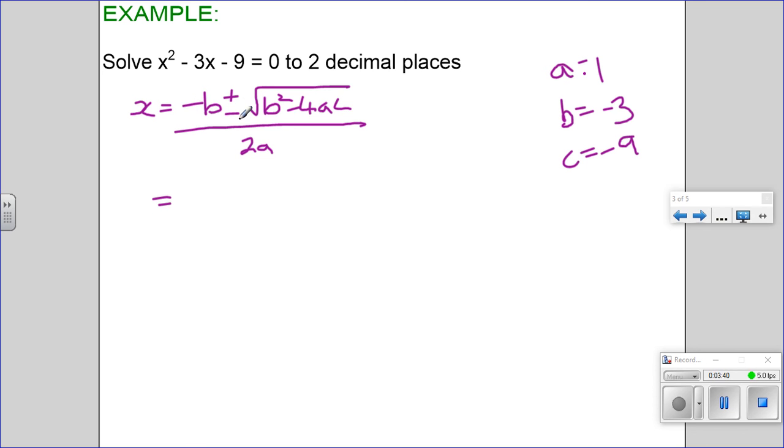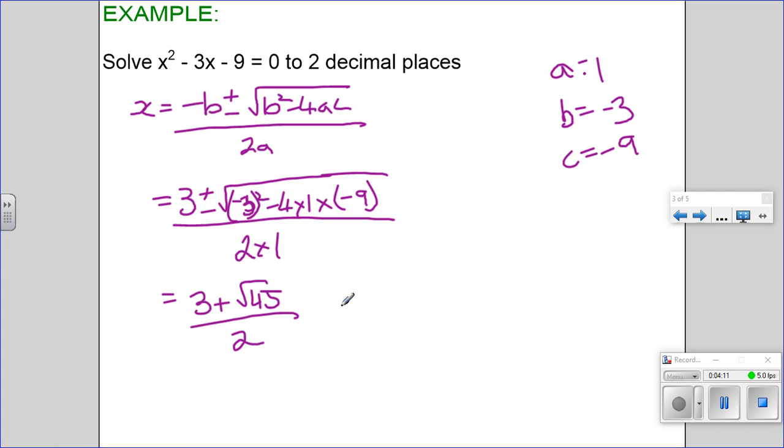Substituting in my values I want -b, so b is already negative so then it becomes positive: 3 ± √((-3)² - 4 × 1 × -9) all divided by 2 × 1.